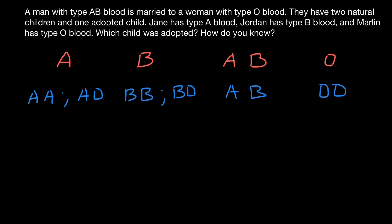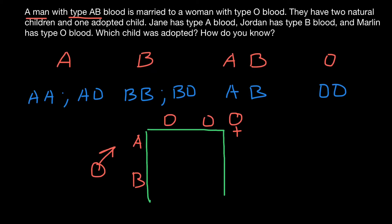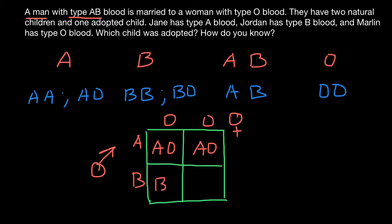According to our problem, a man has blood type AB, so the man has genotype AB, and a woman has blood type O, which means genotype OO. And if we build a simple Punnett square, we can find all the probable genotypes and phenotypes in their progeny. According to the Punnett square, the genotypes possible are AO and BO. So basically, in their progeny, only blood group A and blood group B are possible.